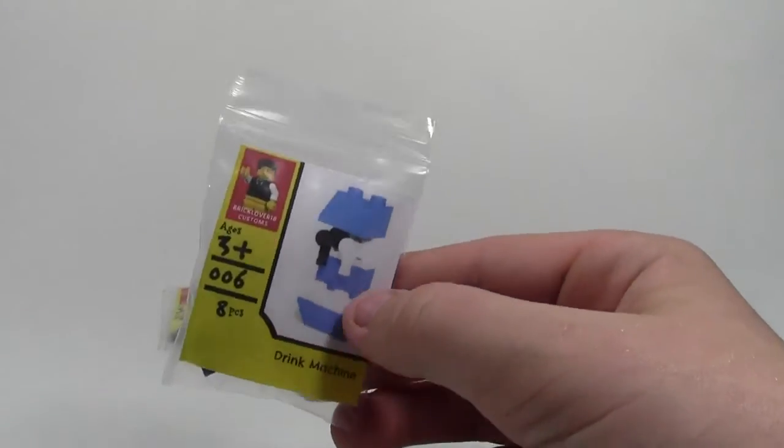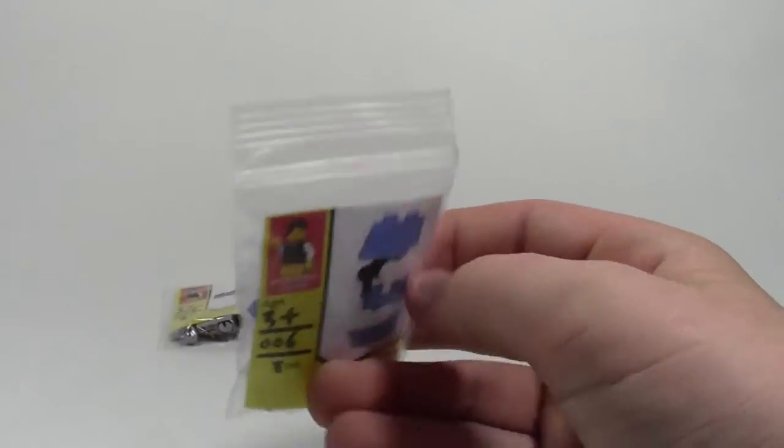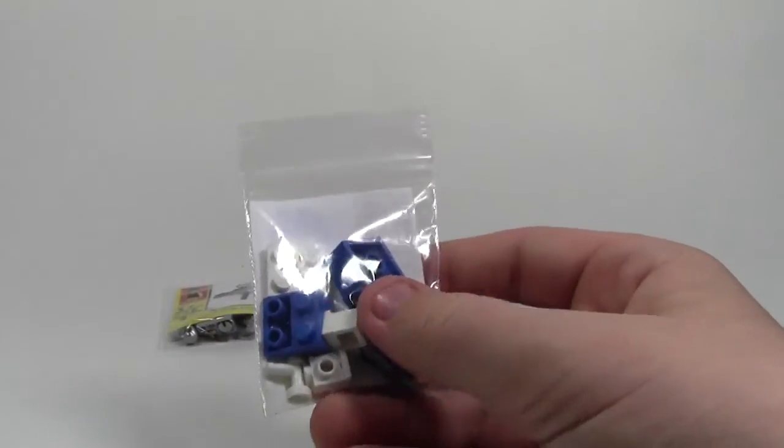The next new product that I'm going to talk about is the drink machine. This set has 8 pieces, set number 006, it is 3+. And here's what that looks like, it is blue and white. And here are all the pieces.